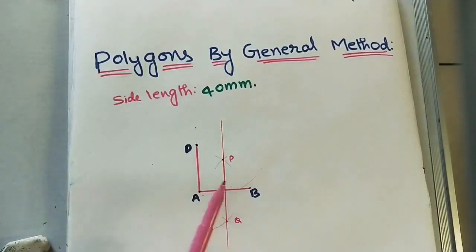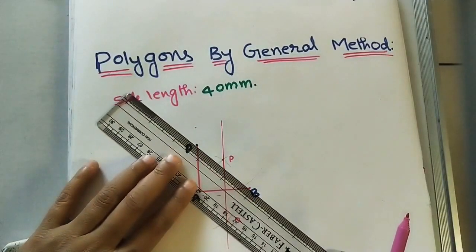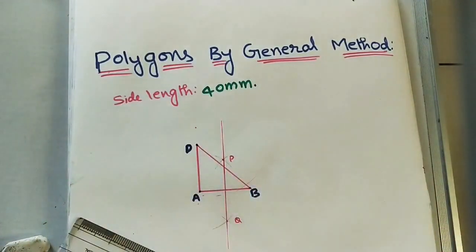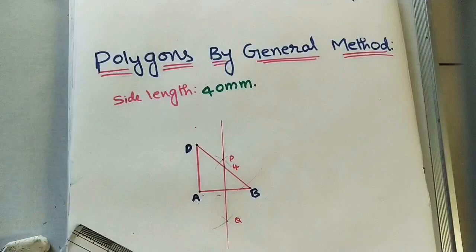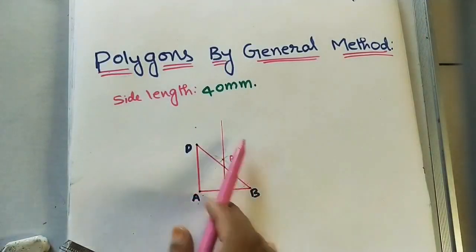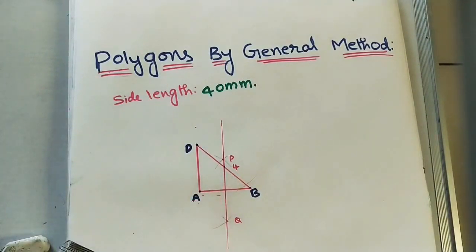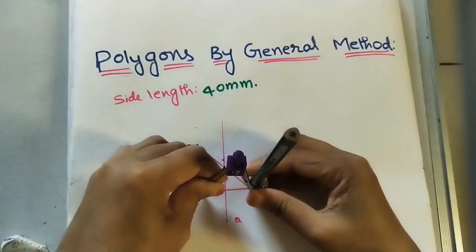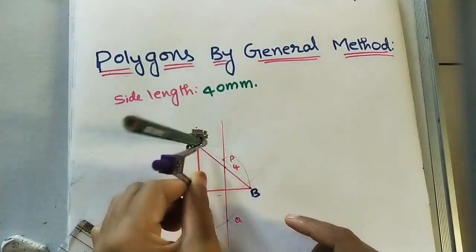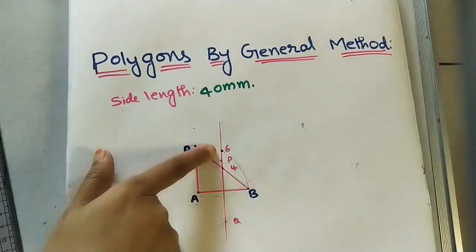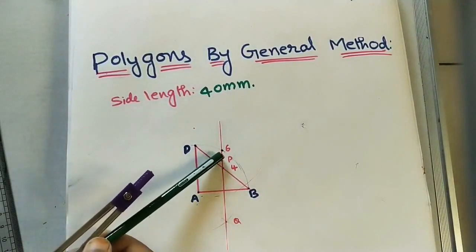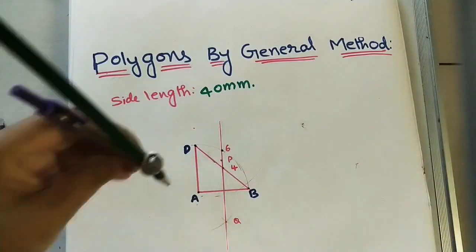After getting the perpendicular bisector, join B and D. The intersection point that comes here is point four. On this perpendicular bisector, we will get points four, five, six, seven and so on. Taking four as center and four-A as radius, we can construct a circle in which we can build four sides — that is the square. To get point five, take AB as radius and draw an arc; wherever it intersects the perpendicular bisector is point six.